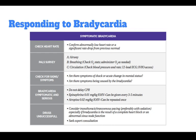If bradycardia is symptomatic and serious, do not delay CPR. Administer epinephrine 0.01 mg per kg IO or IV, which can be given every 3 to 5 minutes. Atropine 0.02 mg per kg IO or IV can be repeated once. If drugs are unsuccessful, consider transthoracic or transvenous pacing, preferably with sedation, especially if bradycardia is a result of complete heart block or abnormal sinus node function. Seek expert consultation.